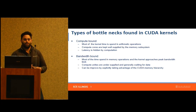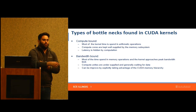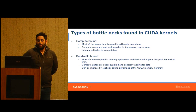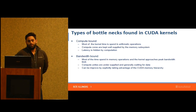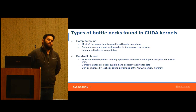I'm going to briefly go around these two bottlenecks, and then the next one is the one I'm going to talk about in more depth. The first one is compute bound, which is probably the nicest one to have. Most of the time spent in the kernel is basically in arithmetic operations, and the compute cores are kept well supplied by the memory subsystem, so all the latency is hidden by computation.